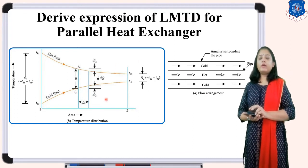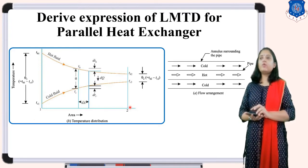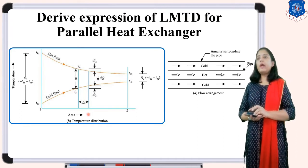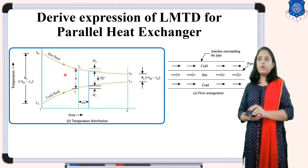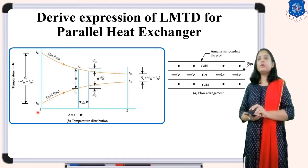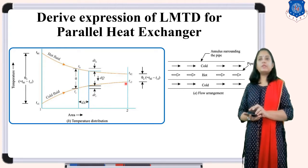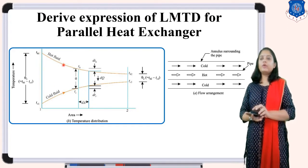Now draw the temperature-area diagram for this flow. The Y-axis is for temperature and the X-axis is for area (from 1 to 2), since temperature changes with respect to length/area. At entry, the hot fluid temperature is TH1; it transfers heat to the cold fluid, so its temperature decreases to TH2 at exit. For cold fluid, the initial temperature is TC1; it absorbs heat and increases to TC2. Both hot and cold fluid flow in the same direction.